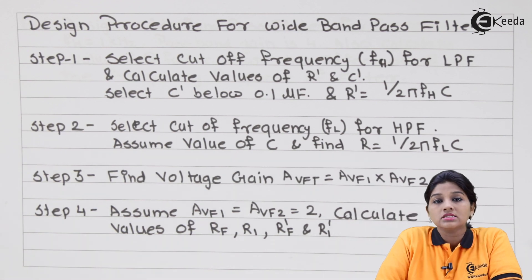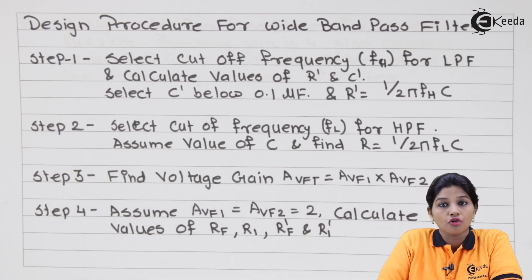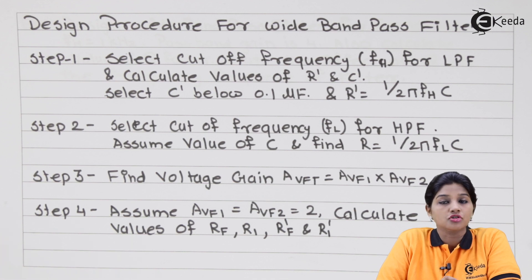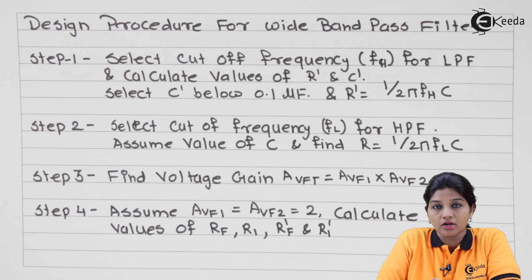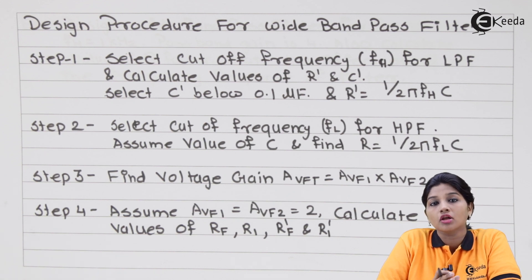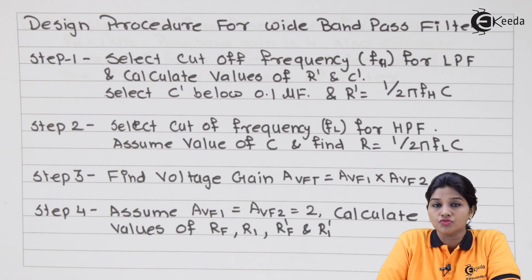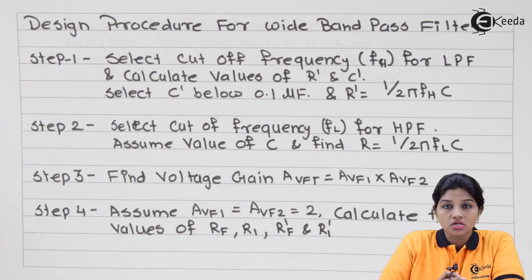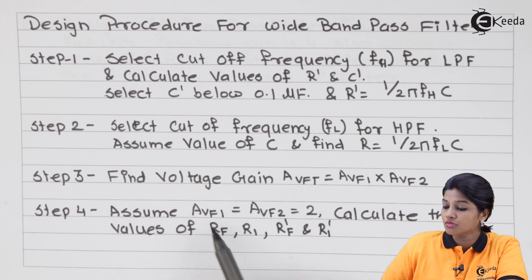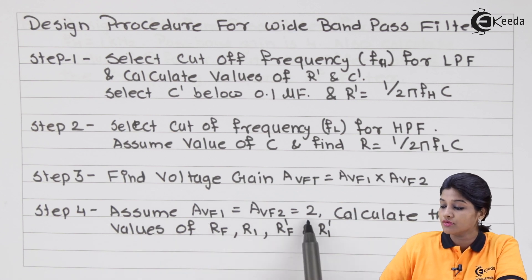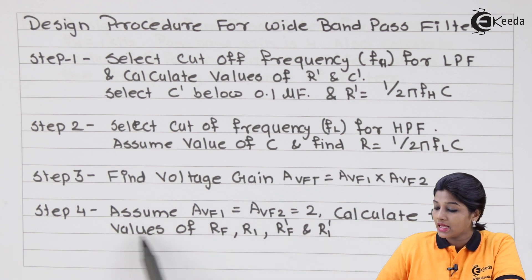The next step is to find the total voltage gain: Avf_total equals Avf1 multiplied by Avf2. Since the wide band pass filter consists of a first order high pass filter and a first order low pass filter connected in series (cascaded form), the total gain is the product of the gain of the individual stages.